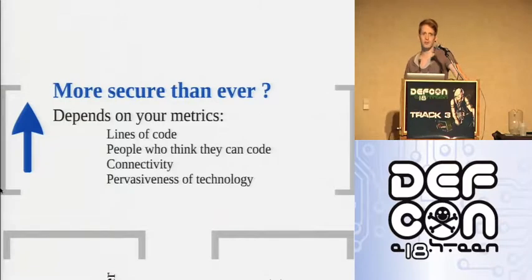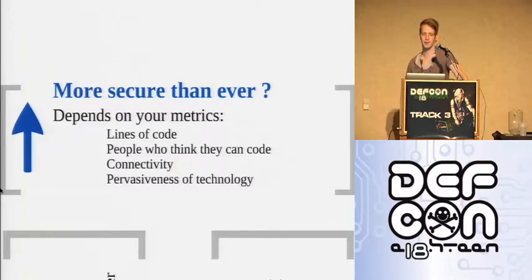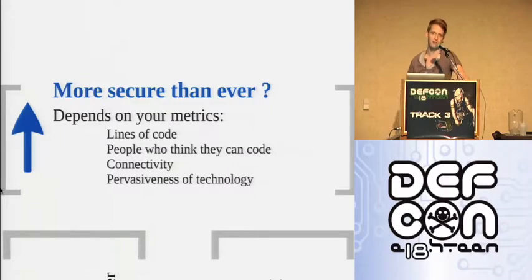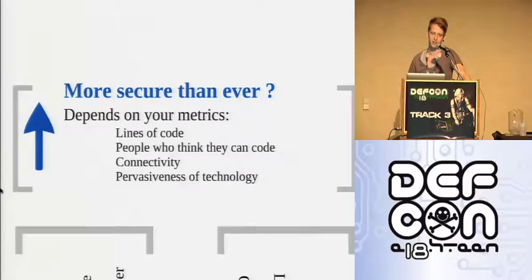There are conferences and vendors peddling snake oil saying we're more secure than ever. But I think it depends on what metrics you're measuring. There are more lines of code than ever, more people who think they can code, everything is network-aware, and the pervasiveness of technology is increasing. I'm not sure we are more secure. High level languages are being used increasingly, and if we can find good techniques to exploit them, we will.